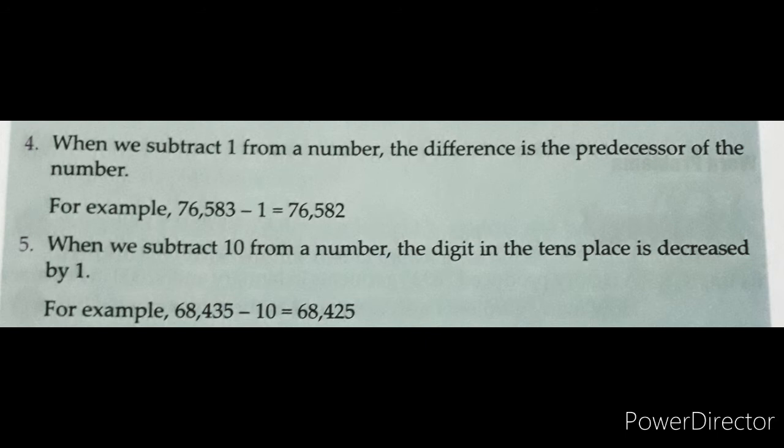Number 5. When we subtract 10 from a number, the digit in the tens place is decreased by 1. When we subtract 10 from any digit, the digit in the tens place decreases by 1. For example, 68,435 − 10 = 68,425.